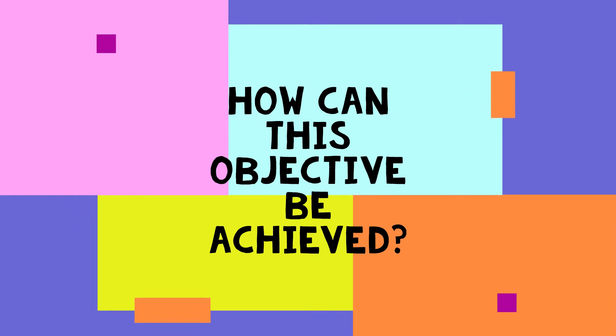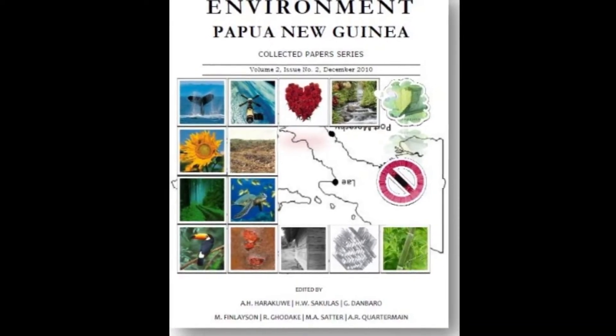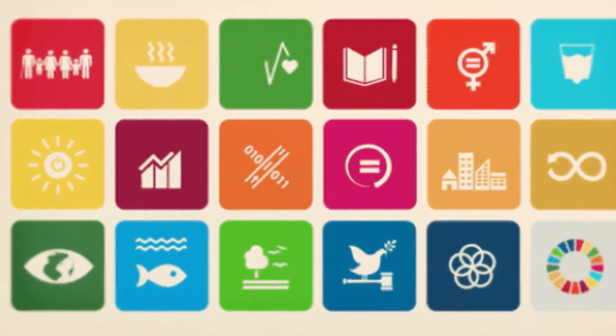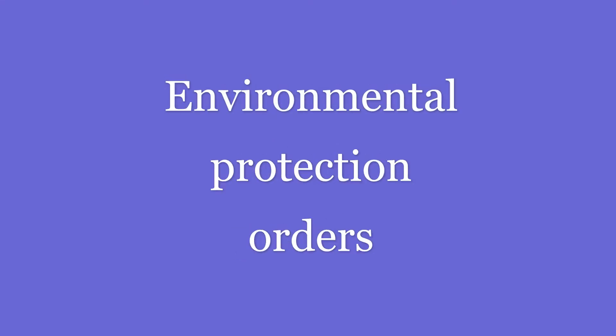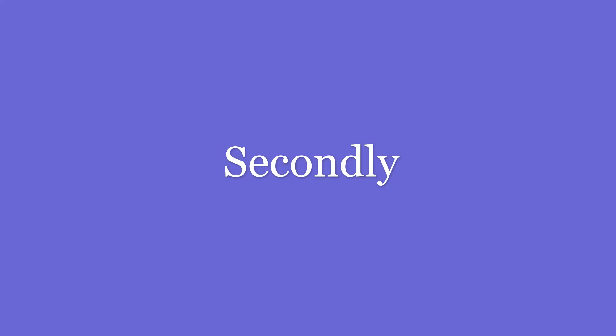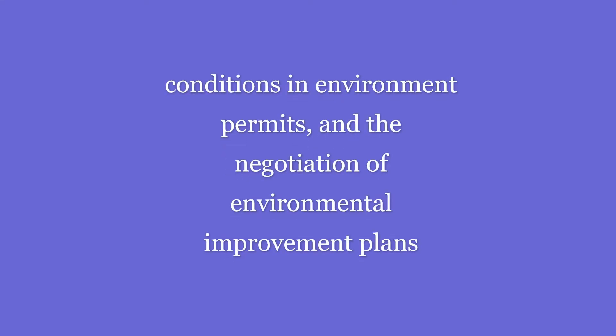So, how can these objectives be achieved? The environment of Papua New Guinea will be protected through a process of setting sustainability goals and providing the resources to enable and guarantee their observance. This is to be achieved by firstly applying the Environmental Objectives to Level 1 activity by means of Environmental Codes of Practice, Environment Protection Orders, Cleanup Orders and Emergency Directions. Secondly, applying the Environmental Objectives to Level 2 and Level 3 activities by means of conditions in Environmental Permits and the negotiation of Environmental Improvement Plans and Environmental Management Programs.